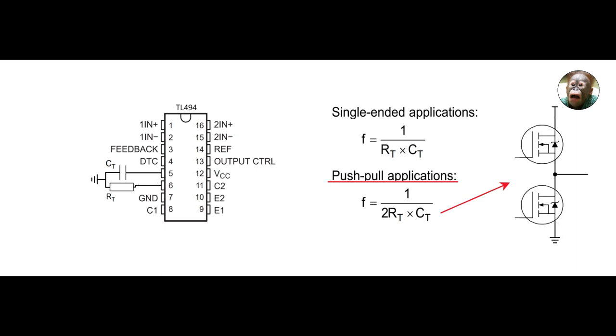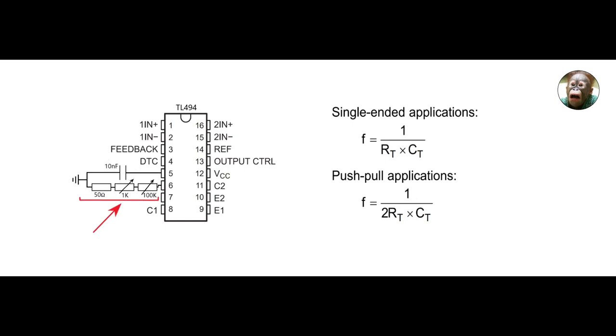In most commercial power supplies, the oscillator frequency is fixed. However, if you want to be able to change the frequency yourself, you can simply add some variable resistors. Here I show two values: one for coarse and one for fine adjustments.